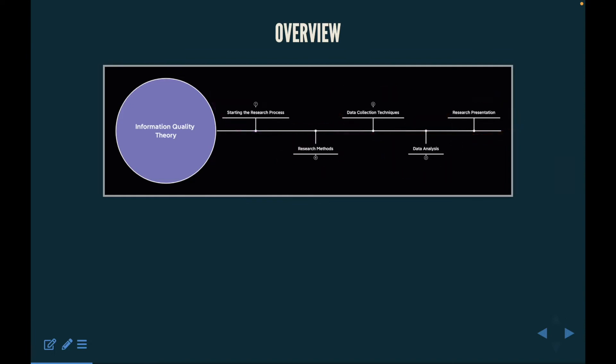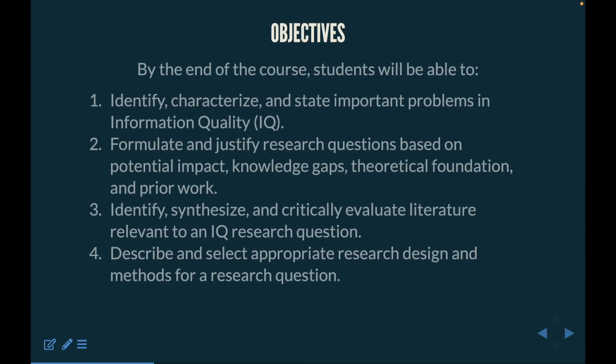Let's talk about the objectives we're going to want to achieve. By the end of this series, you're going to be able to identify, characterize, and state the important problems in information quality. We're going to be able to formulate and justify our research questions based on potential impact, knowledge gaps, theoretical foundations, and prior work.